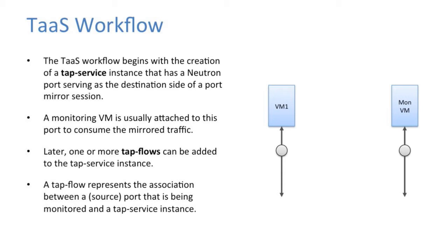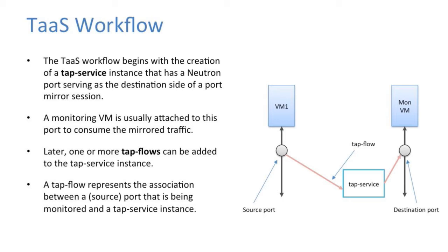For example, we have two VMs: VM1 and the monitoring VM as the second VM. We create a TAP service on the second VM with the destination port where the packets would actually land. Then we create the TAP flow with the source port on VM1. If we have two or more VMs from which we have to copy packets, we can create different TAP flows and land them all on the same destination port to analyze the packets.